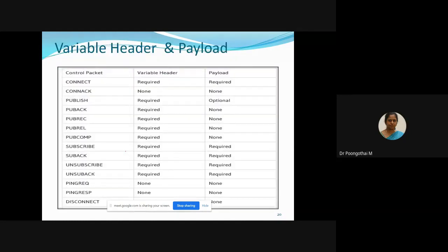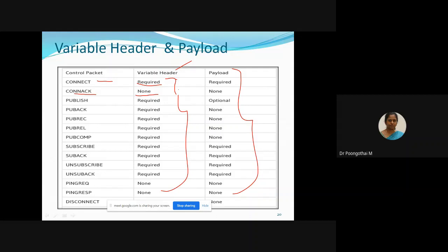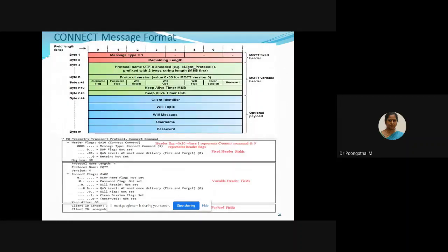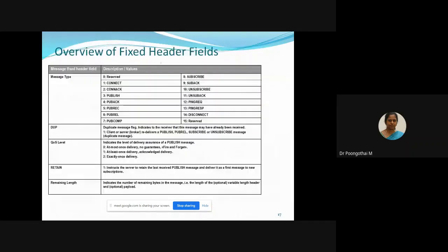The MQTT control packet structure is different for different MQTT requests. This table shows which requests have a variable header present or not. For a connect request, the variable header will be available; for connect acknowledge, it is not present in the variable header. Similarly, the payload table shows which requests require a payload or not. We are going to concentrate on four: connect, connect acknowledge, publish, and subscribe.